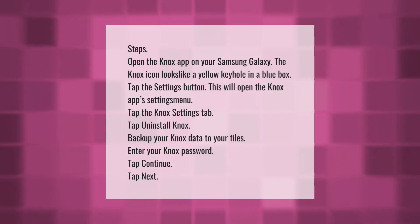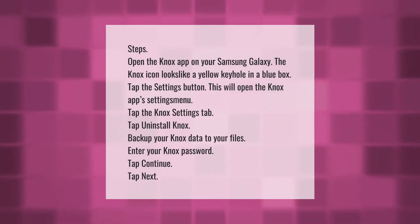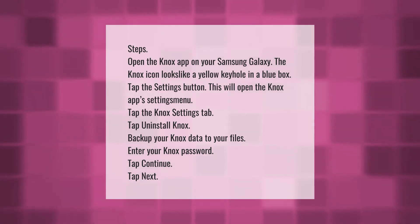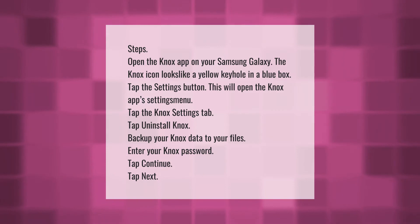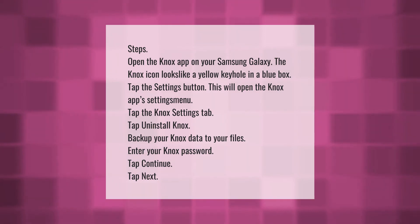Steps: Open the Knox app on your Samsung Galaxy. The Knox icon looks like a yellow keyhole in a blue box. Tap the Settings button to open the Knox app settings menu. Tap the Knox Settings tab, then tap Uninstall Knox. Back up your Knox data to your files, enter your Knox password, tap Continue, then tap Next.